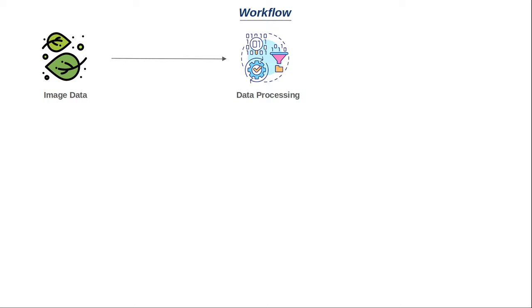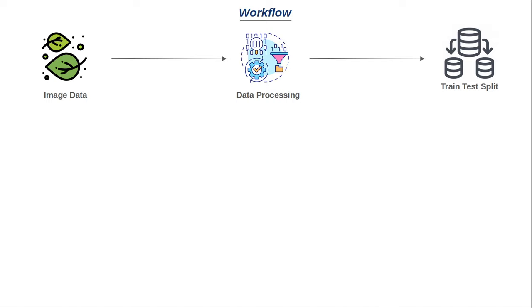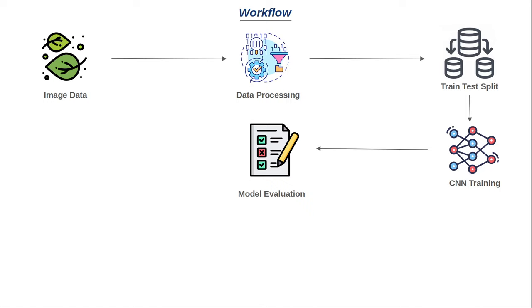Once we have our image dataset, the next step is data processing. In this step, we will work with the ImageDataGenerator class from TensorFlow, loading image data from the directory with appropriate classes and making it suitable for the neural network. We will then split our dataset into training and test data, building a pipeline for a training data generator and a validation generator. Next, we will build our convolutional neural network with appropriate convolutional layers and dense layers, train the model, evaluate it, and save it as a file.